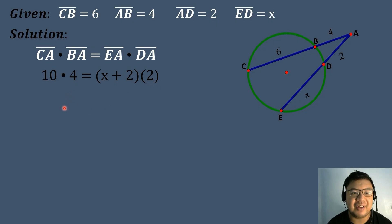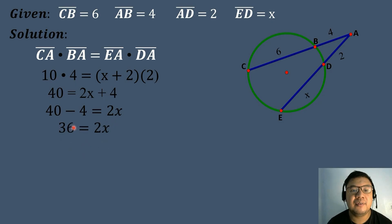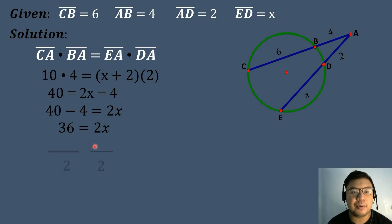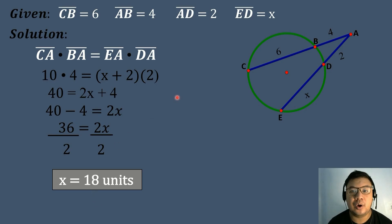We simplify: 40 equals 2X plus 4. Transposing positive 4, it becomes negative 4: 40 minus 4 equals 2X, so 36 equals 2X. We divide both sides by 2: 36 divided by 2 equals 18. So the value of segment ED is equal to 18 units.